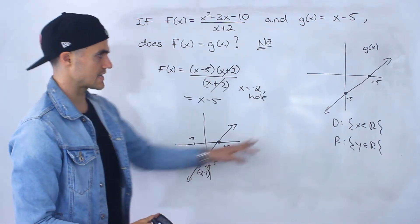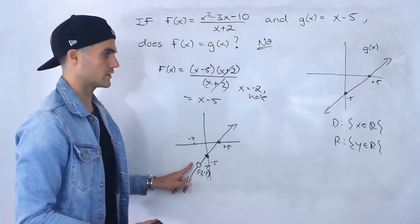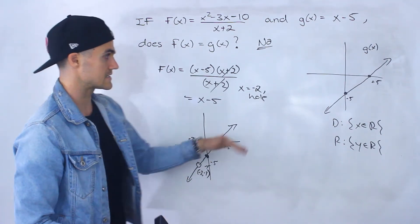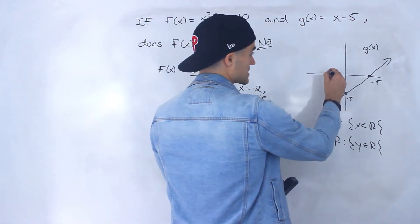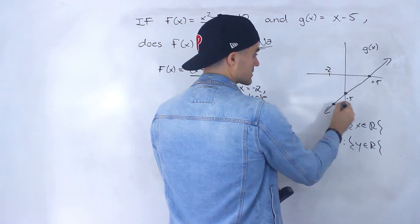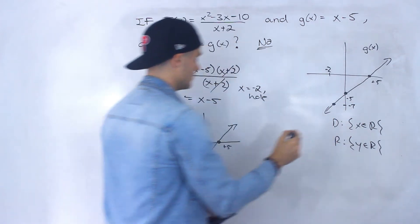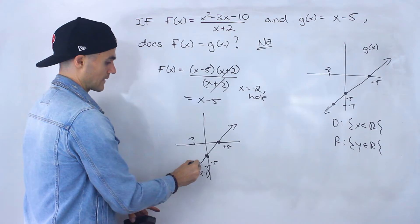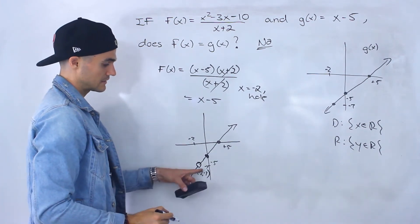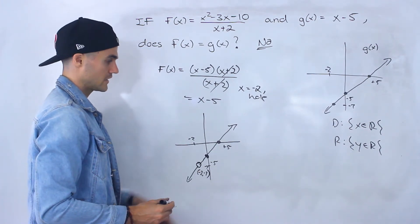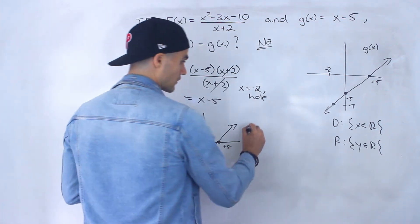So it's the same line except there's a hole here, and it's not the same thing. Because g(x) here is defined at x = -2 with y = -7, but f(x) is not defined at x = -2 and y = -7.